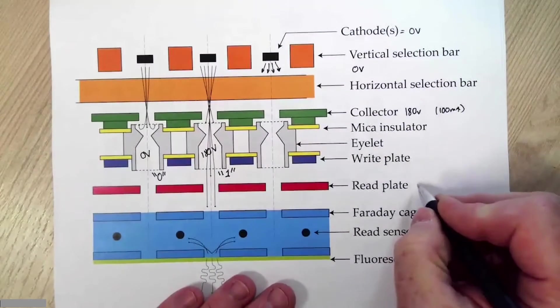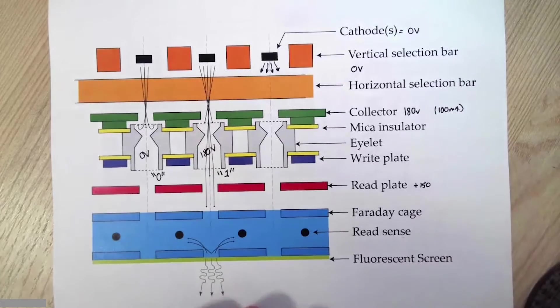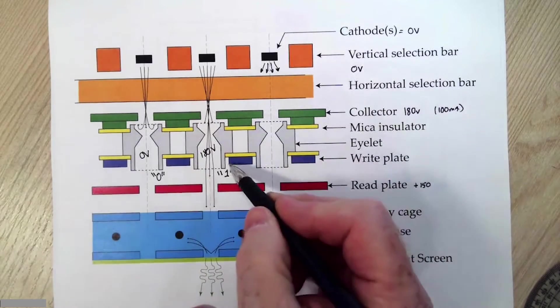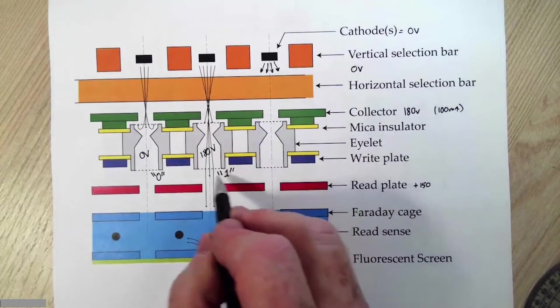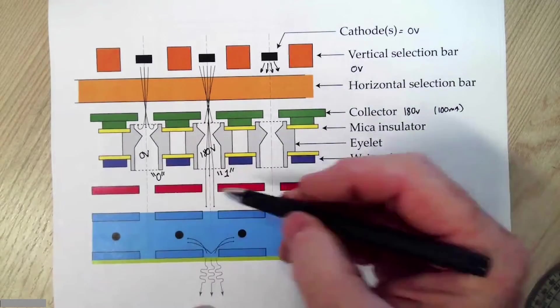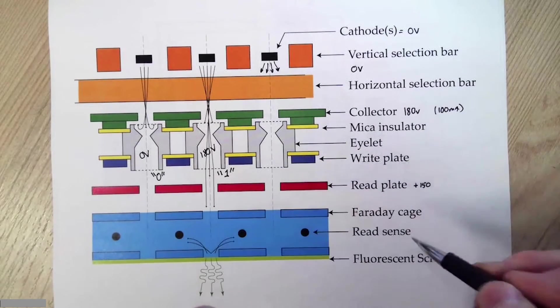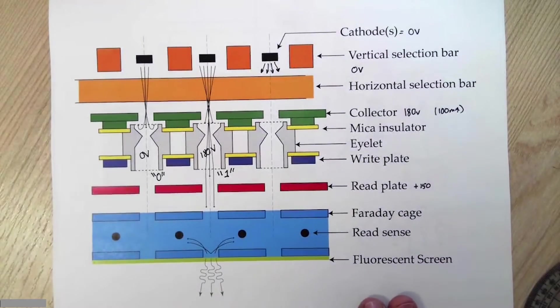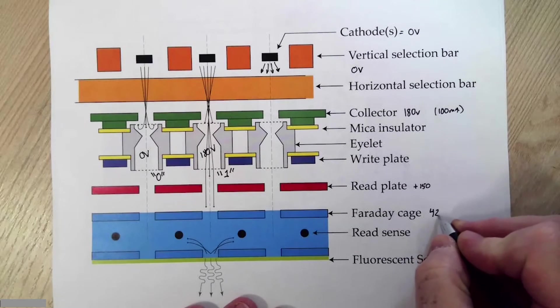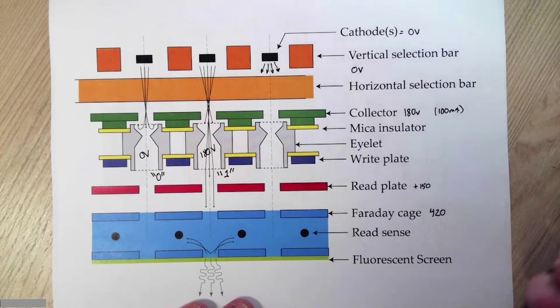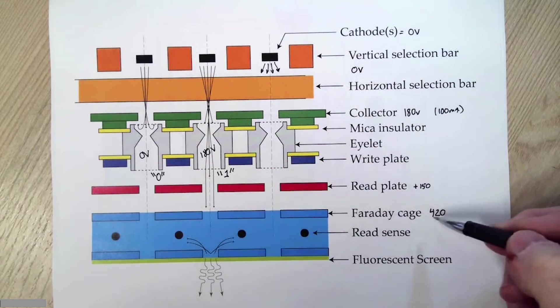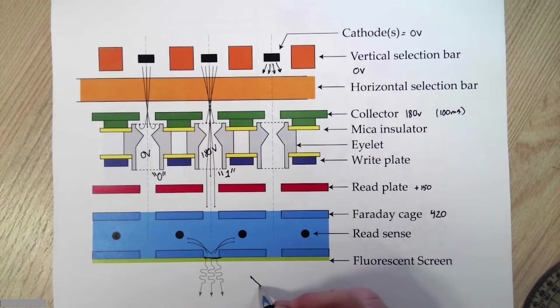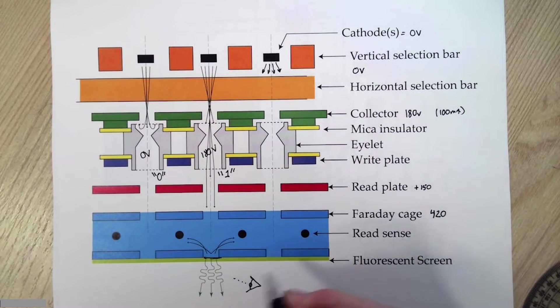The read plate. Let's assume for the moment this is 150 volts. With it being so positive, if I have electron current coming through a high or a status high, status one, 180 volt eyelet, I have electron current coming through. It is then accelerated towards the Faraday cage because we're going to bias this very positive. The data sheet says you can use anything from 300 to 800, I believe. I settled on 420, 450 volts.